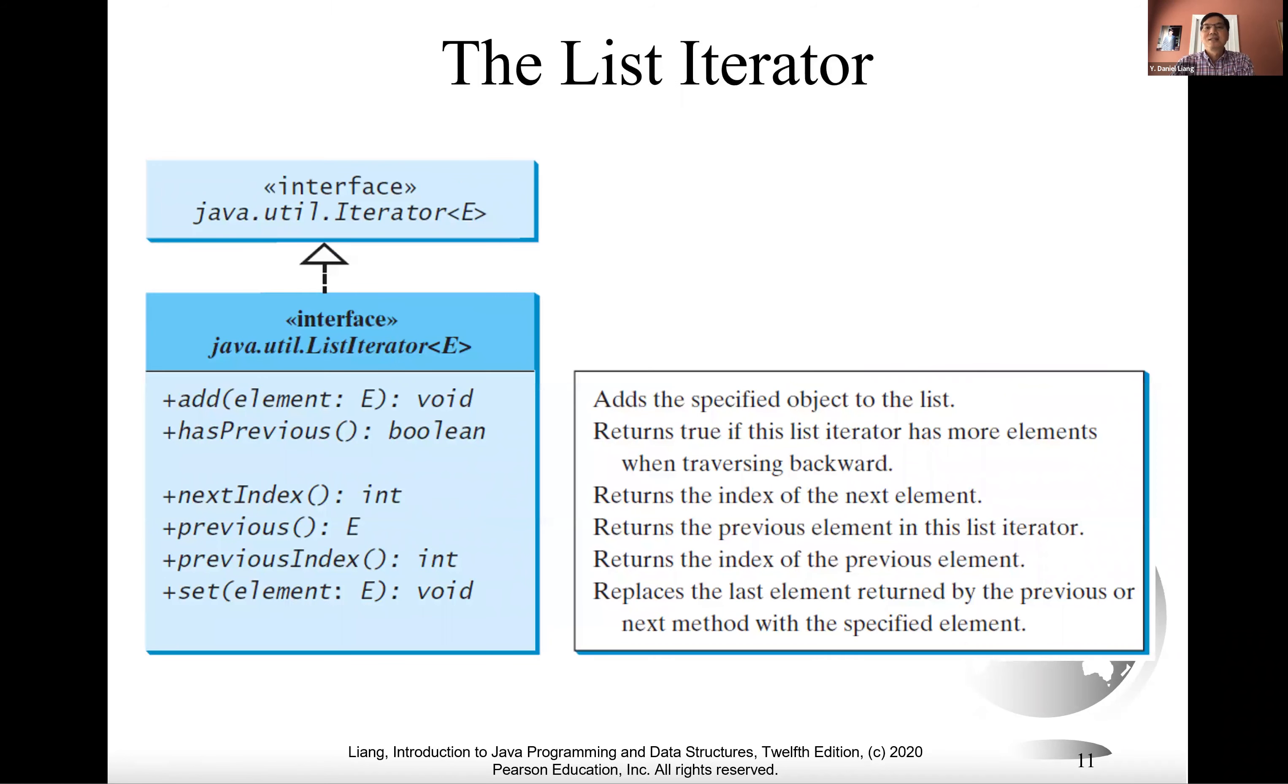The list iterator is a sub-interface of the iterator interface. In the list iterator, we add has previous, add an element, next index, previous, previous index, and set the element at this given location. So the list iterator is a sub-interface of iterator.